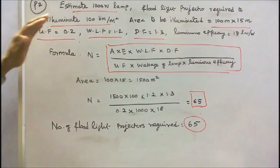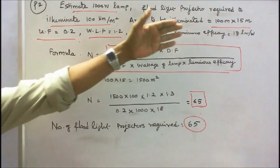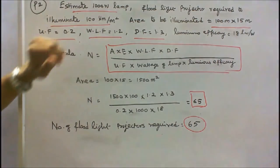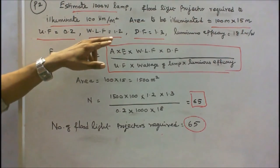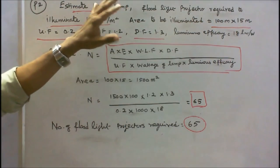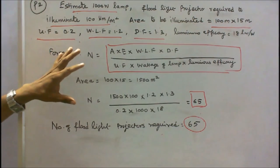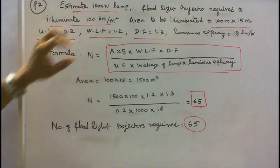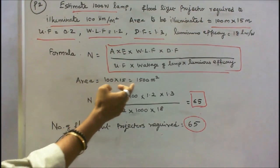Given: wattage of lamp = 1000 watts, area to be illuminated = 100 m × 15 m = 1500 square meters, illumination E = 100 lumens per meter square, utilization factor = 0.2, waste light factor = 1.2, depreciation factor = 1.3, luminous efficacy = 80 lumens per watt. Using the formula N = [A × E × WLF × Depreciation Factor] / [Utilization Factor × Wattage × Luminous efficacy].